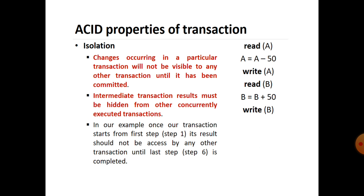Isolation: changes occurring in a particular transaction will not be visible to any other transaction until it has been committed. Intermediate transaction results must be hidden from other concurrently executing transactions. In our example, once our transaction starts from the first step, its result should not be accessed by any other transaction until the last step — write B — is completed. The sequence is: read A, A equals A minus 50, write A, read B, B equals B plus 50, write B.